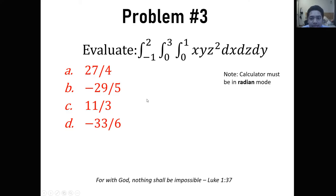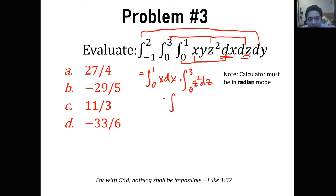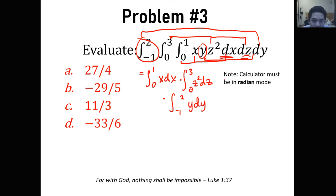For number 3, we have a triple integral. Let me rewrite: x dx is paired with its integral from 0 to 1. Then z squared dz is paired with its integral, because we follow the order dx and dz. So from 0 to 3 of z squared dz. That is then multiplied by y dy, whose integral goes from negative 1 to 2. Treating all variables such as z and y as x, we won't have any problems since the calculator only gives us a variable x.